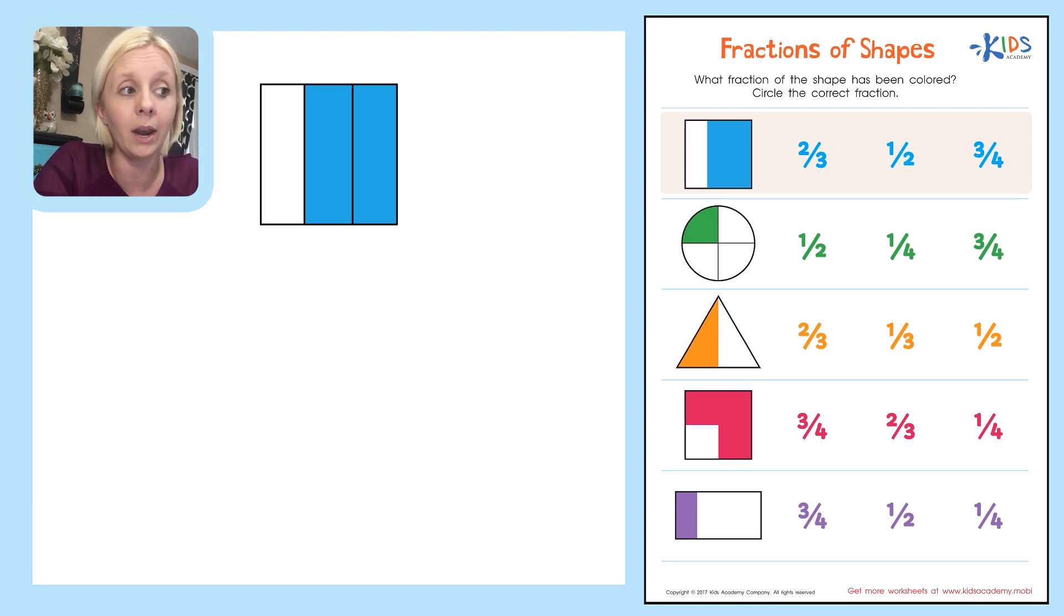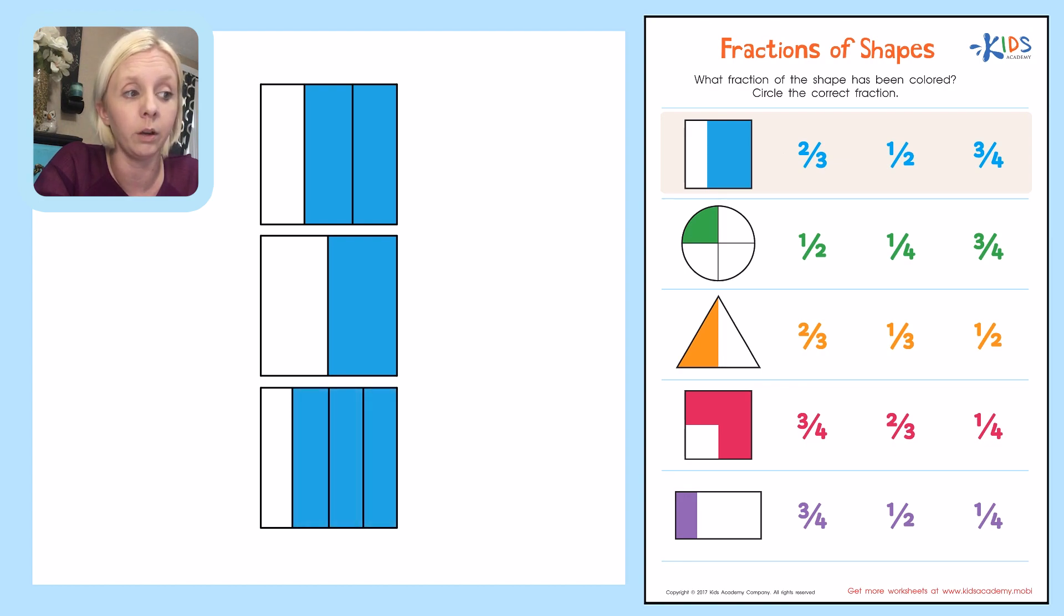The next option says one half. So that means the bottom number tells us that the square would be divided up into two equal parts right down the middle. And then one of them would be filled in to be one half. The last one is three fourths. So three fourths tells us that the square would be divided into four equal sections. And that three of them would be filled in.